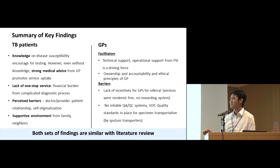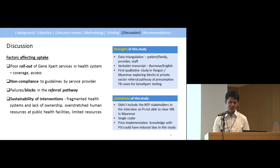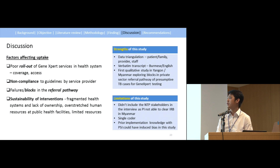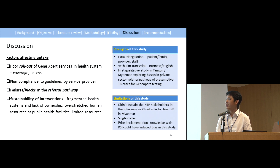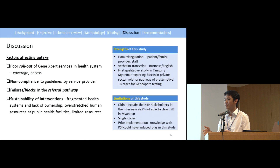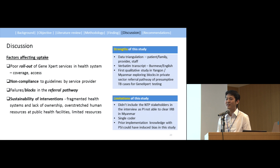Most findings were consistent with the literature review. In discussion, we observed a poor integration of GeneXpert services in the health system, non-compliance with guidelines by service providers, and failures in the referral pathway. For sustainable interventions, the current health system is fragmented with lack of ownership — it is unclear where to track patients if they are lost mid-pathway. Overstretched human resources at public health facilities lead to impatience from doctors and healthcare providers, resulting in negative patient experiences, alongside limited resources.